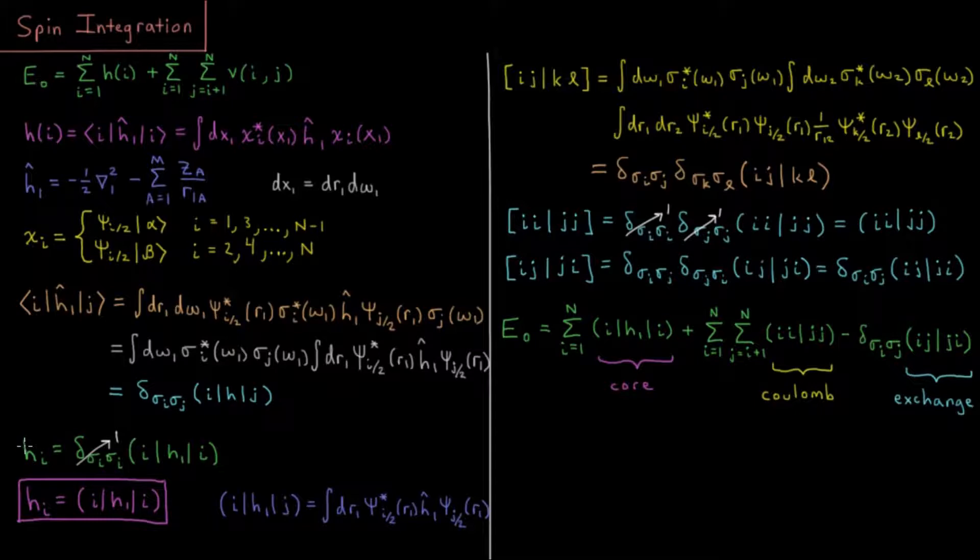So what does this mean for our specific kind of core Hamiltonian energy for our one electron operators? So hi, we noted, was the Dirac notation integral ih1i. So i and j are always the same as far as these are concerned. So this gives us the Kronecker delta of sigma i and sigma i. And, you know, reflexive property, if they're both sigma i, they always have to be equal. So that means this Kronecker delta is always going to be one. So in fact, spin doesn't matter at all for our core energy of our electrons, our kinetic plus nuclear attraction energy. For every electron, it's just the spatial part that matters, which was just this integral indicated up there.